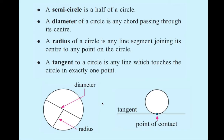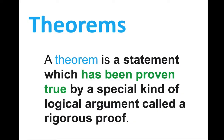Let's continue and look at some theorems. A theorem is a statement which has been proven true by a special kind of logical argument called a rigorous proof. In other words, a theorem is something that if we know some facts or evidence, and we use those facts to prove something new, this new thing we have proven is called a theorem. We're going to be looking at different theorems for circles.